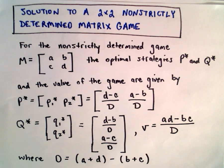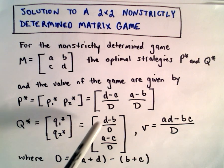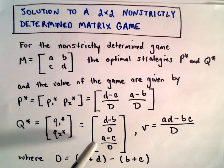To get the probabilities for Q, Q1 star, Q2 star, we do D minus B over capital D, A minus C over capital D, and the value is AD minus BC over D.